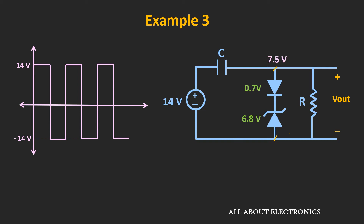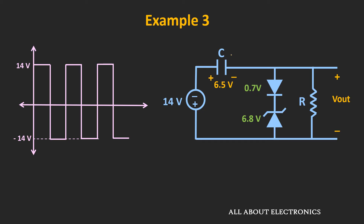That voltage will also appear as an output voltage. So during this positive half cycle, this capacitor will get charged in this direction, and it will get charged to the voltage of 14 minus 7.5V — that means it will get charged to the voltage of 6.5V. Now during the negative half cycle, the input voltage will become minus 14V and the voltage across the capacitor will be equal to 6.5V. If you observe, the voltage appearing across these two terminals will be equal to minus 20.5V.